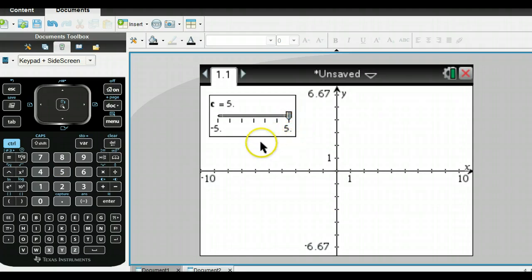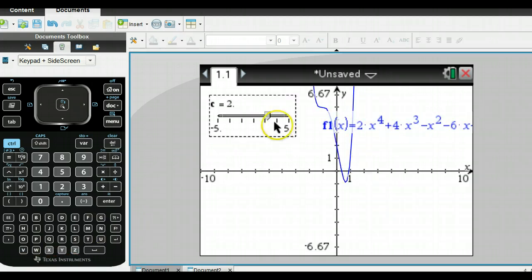Now you can do one of two things. You can grab this and move it back and forth, or you can use the left arrow and right arrow. So there's my function, graphed.